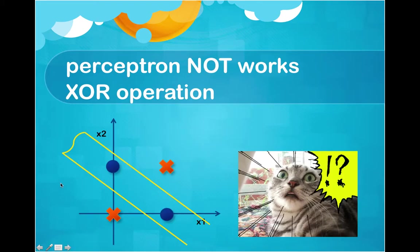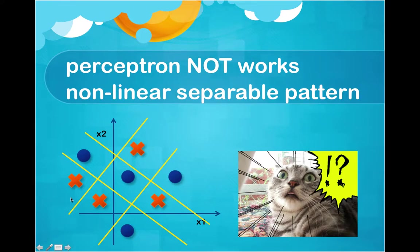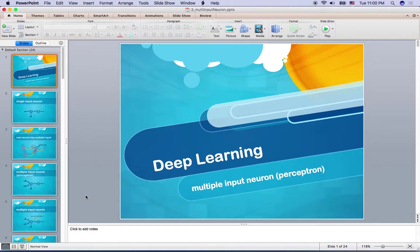But the thing is, this multi-input neuron cannot handle something that is not linearly separable, such as the exclusive OR (XOR) operation — as you can see, XOR cannot be linearly separated. When people found this, they thought the perceptron could not work well in many real-world problems. Many people didn't like the perceptron until somebody found a way to use it in multiple layers. We'll talk about the multiple layer perceptron in the next video. Thank you very much and I'll see you in the next video.